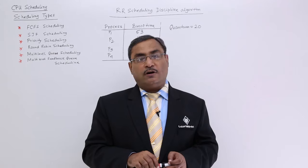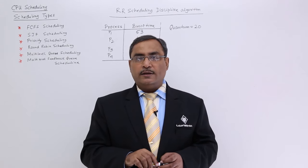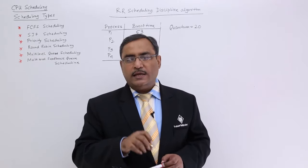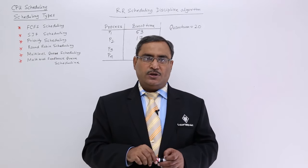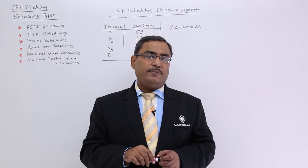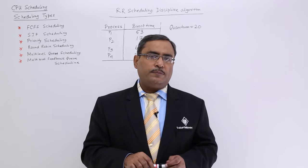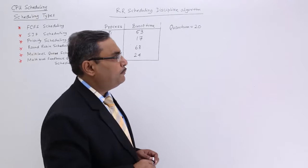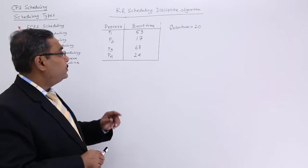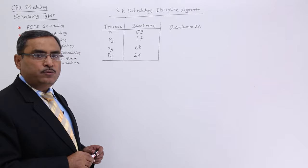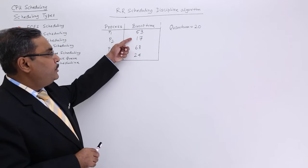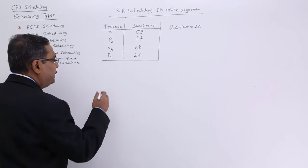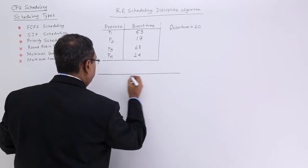But there is one disadvantage of round robin scheduling. Taking away the CPU from a process and allocating to another process, it is known as context switching. So that is the overhead to the system. And the system will have to bear that overhead in case of round robin scheduling. Now, let me go for one problem with the numerical values. Here, we are having four processes, P1 to P4. And the burst durations are given. And the quantum duration is given, it is 20.